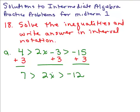And now I know what 2x is between, but I have to divide everything by 2 to solve for x. So 7 halves is greater than x is greater than negative 6.